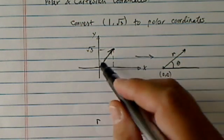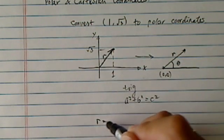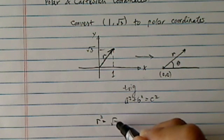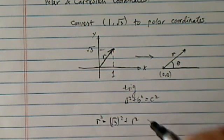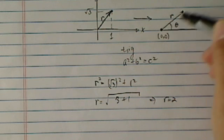So r, you can see here, here's my r, is equal to radical 3 squared plus 1 squared. And then r equals 3 plus 1. So r equals 2. So basically you go two units out.